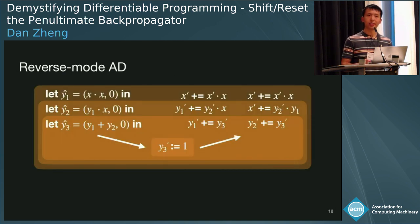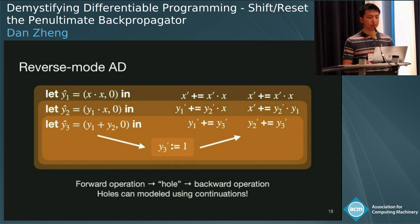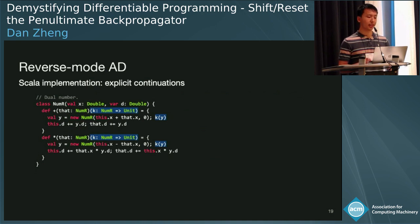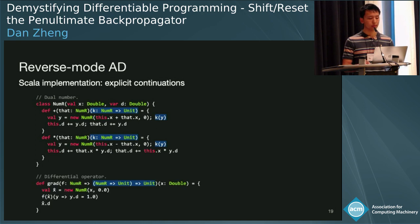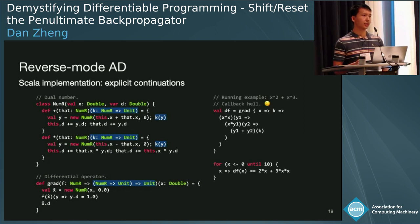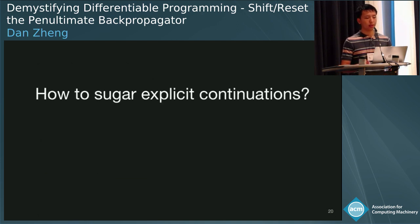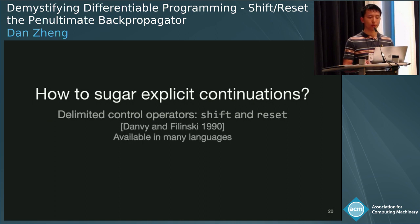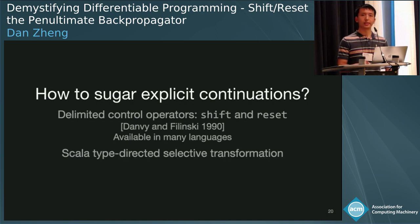Let's look at this differently. If we think of each operation as a horizontal slice with a forward component, a hole in the middle, and a backward component, we realize we can model these holes using continuations. We augment the math operators to take an explicit continuation parameter k: we apply a forward computation, call k on the output y, then update the derivatives. The differential operator's signature is a bit different to account for the continuation; in the innermost continuation, we set the derivative of the output to one. However, with explicit continuations we have callback hell. The answer from the paper is to use the delimited control operator shift and reset — well explored and available in many languages like Scheme and OCaml, and in Scala via a type-directed selective transformation. Shift can be used anywhere a value of type A is expected, but must be within a reset context of type B.